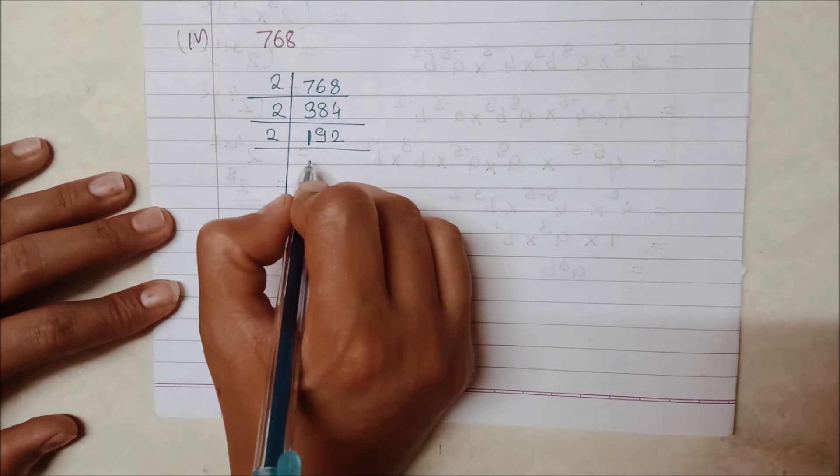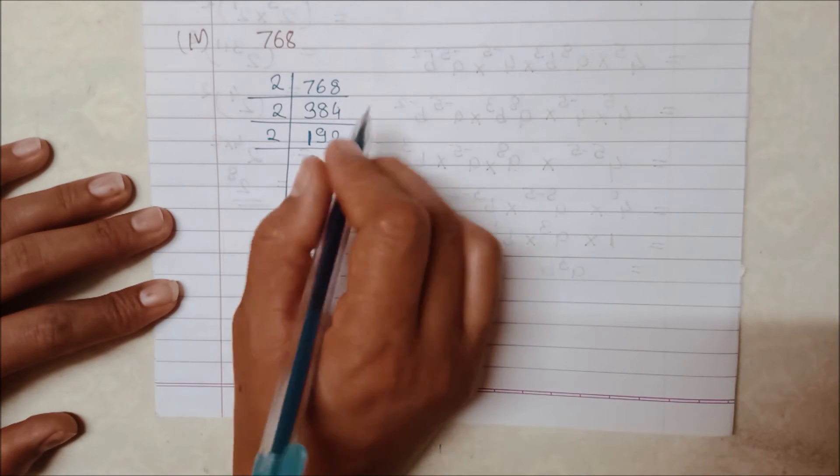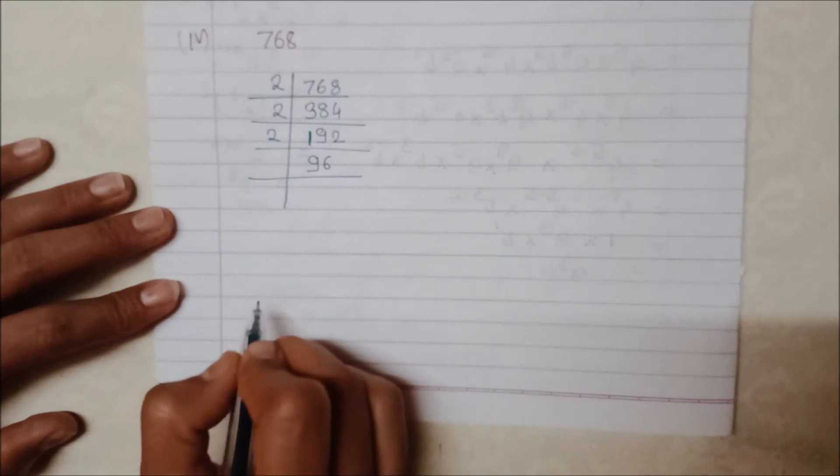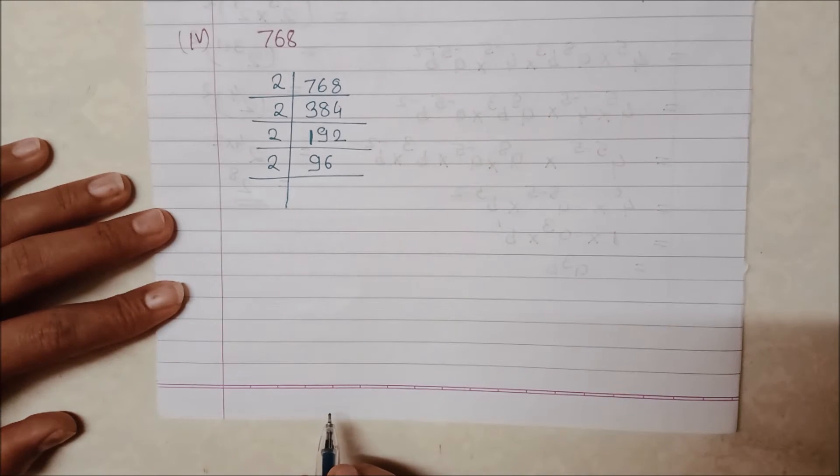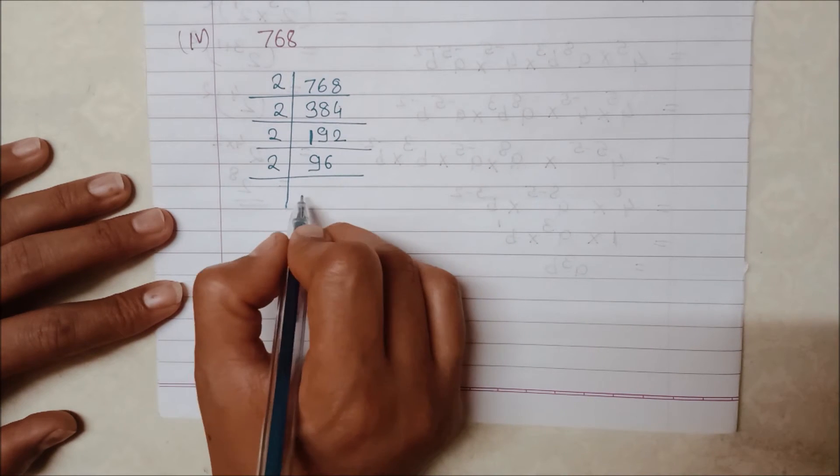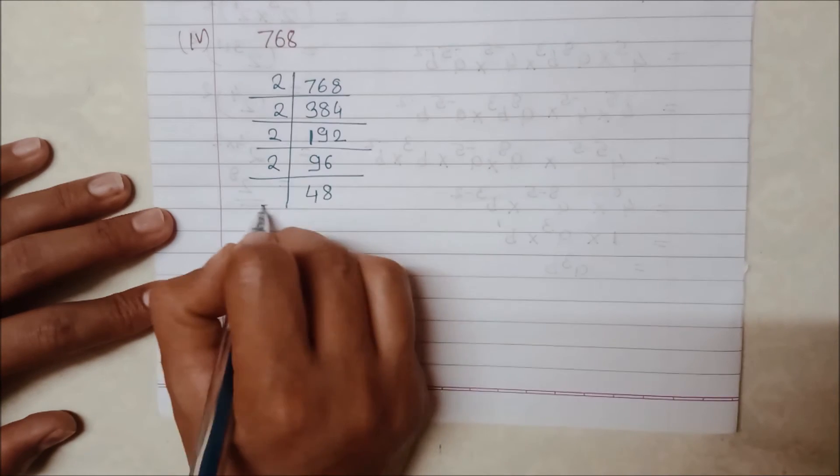We continue dividing by 2. 96 divided by 2 gives 48. Again 48 divided by 2 gives 24, then 12. We keep dividing by 2.